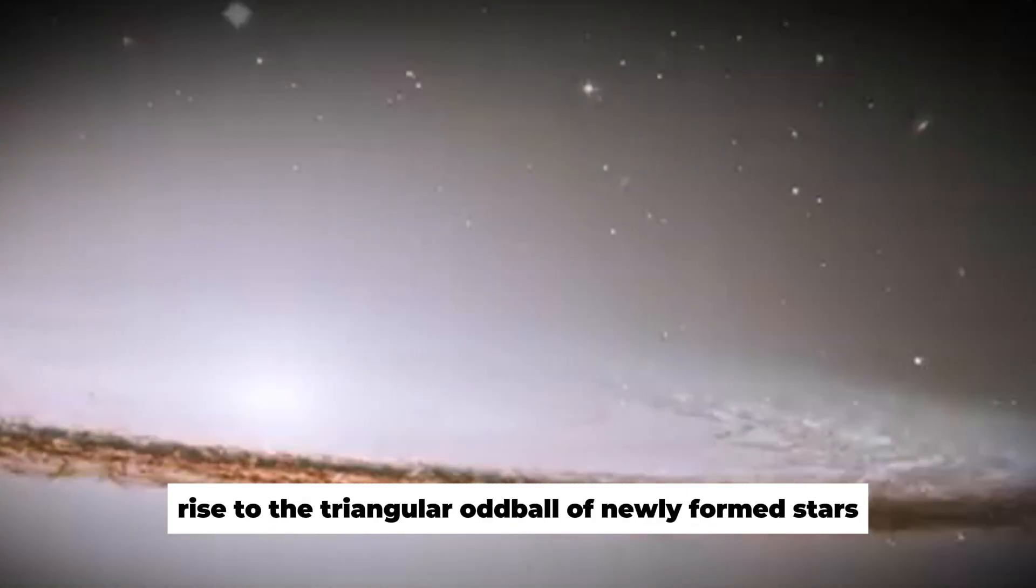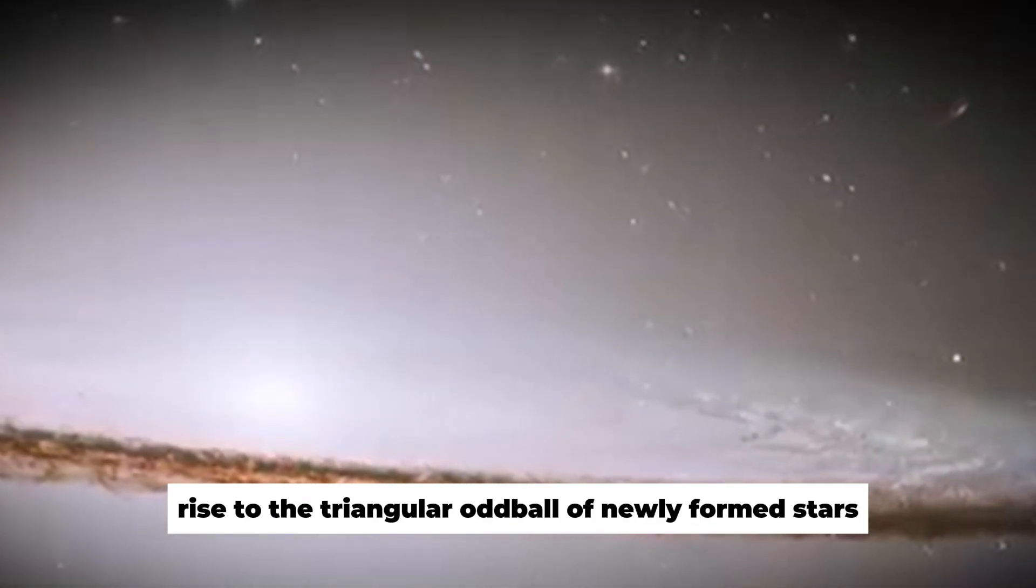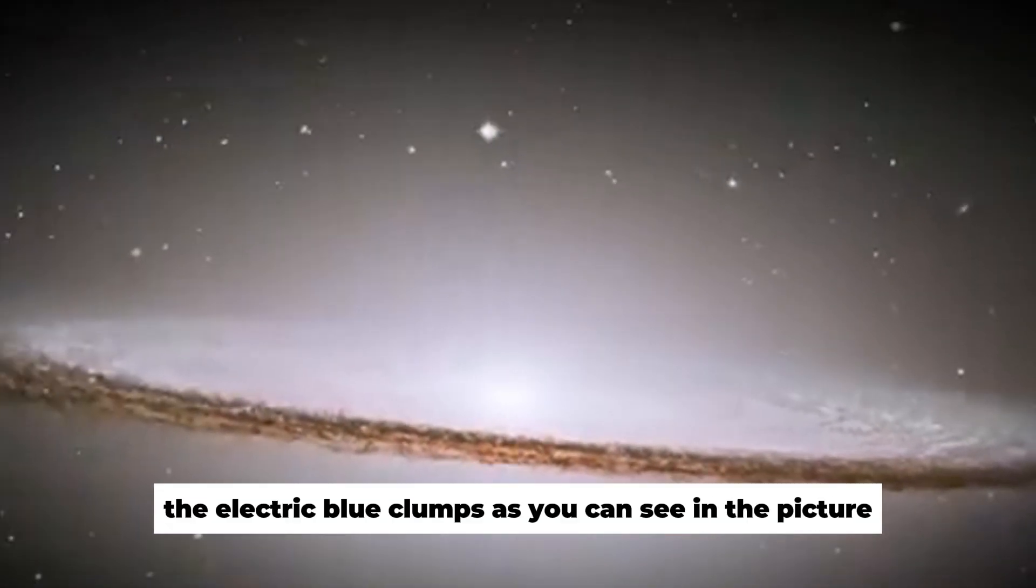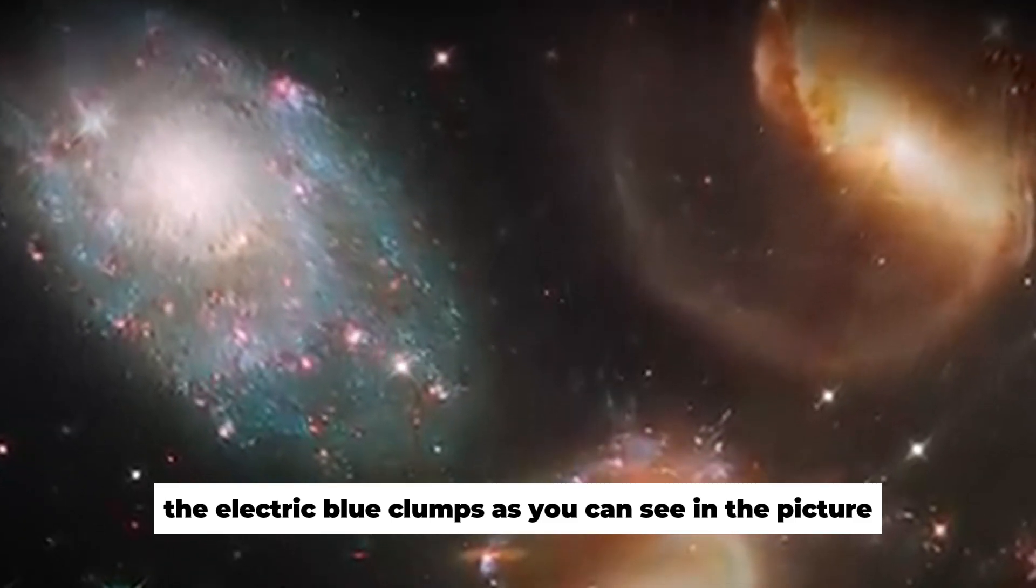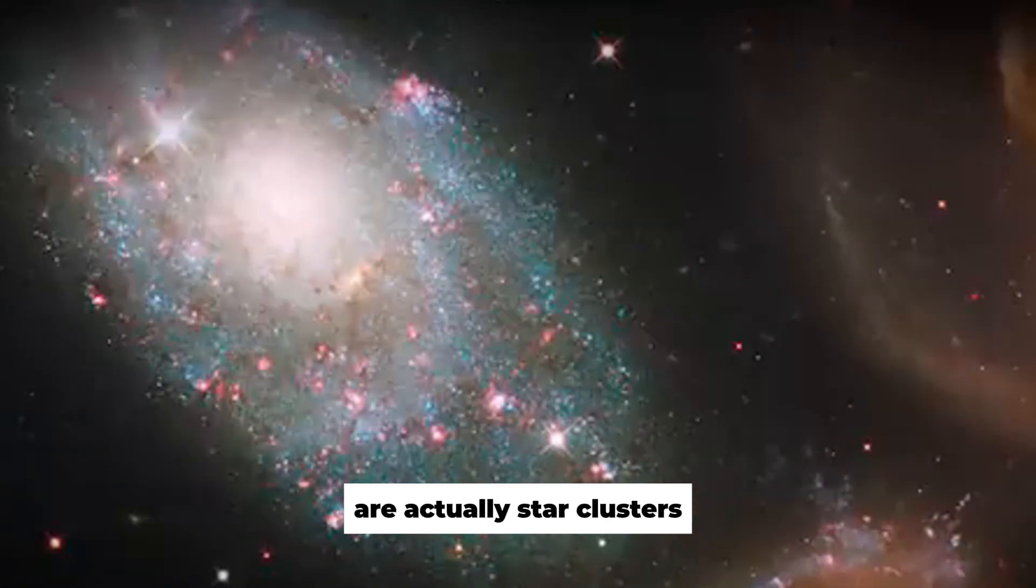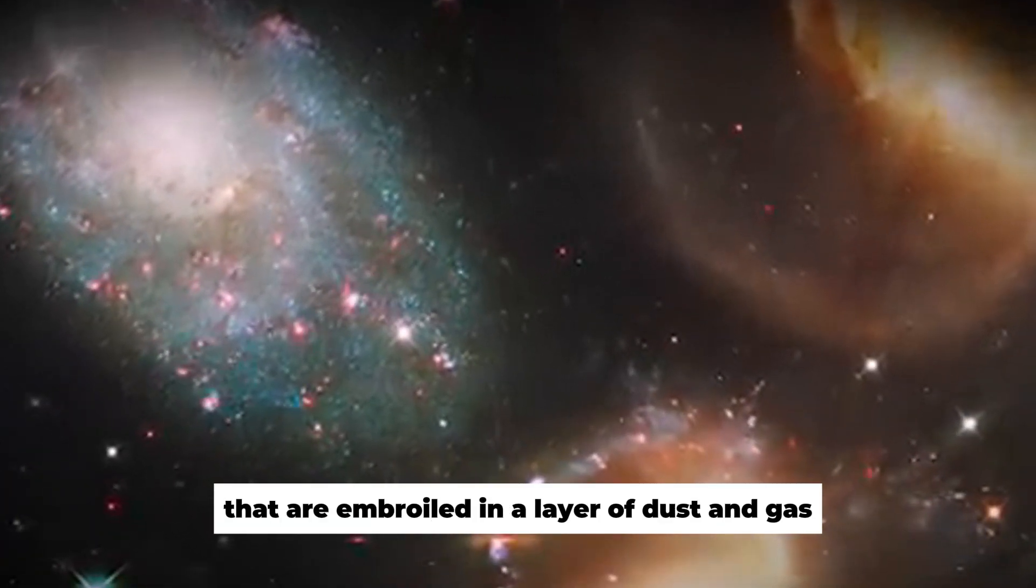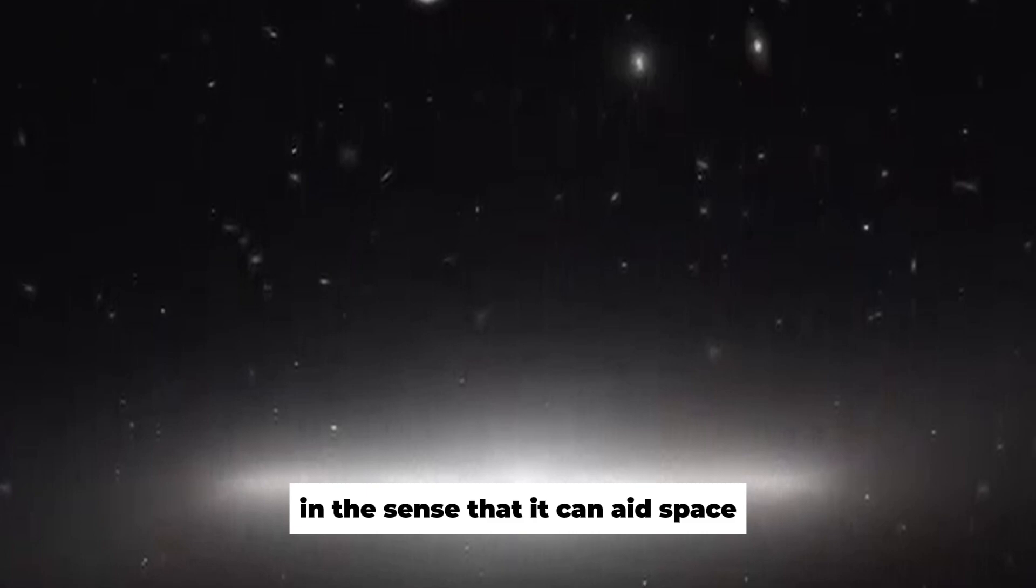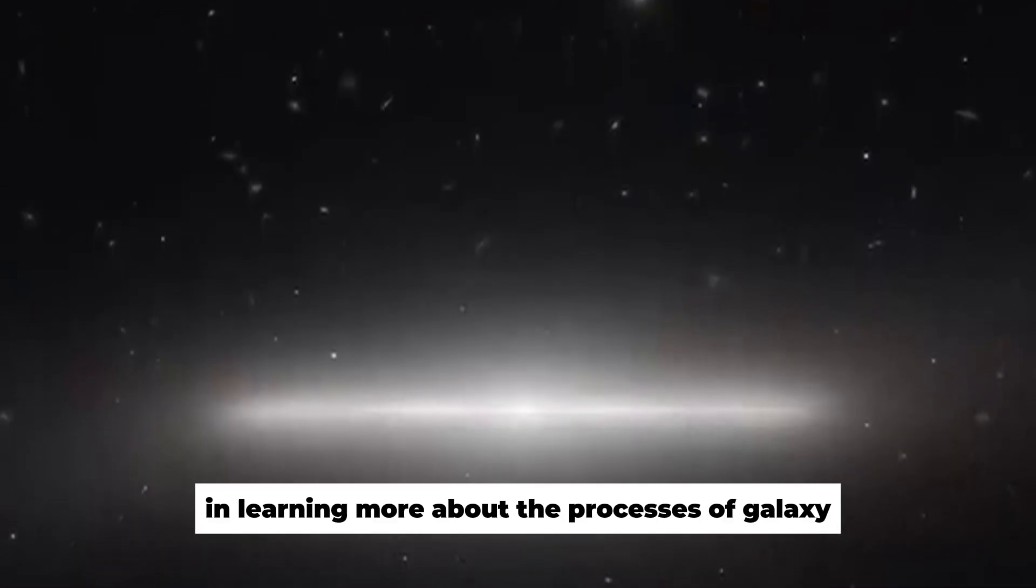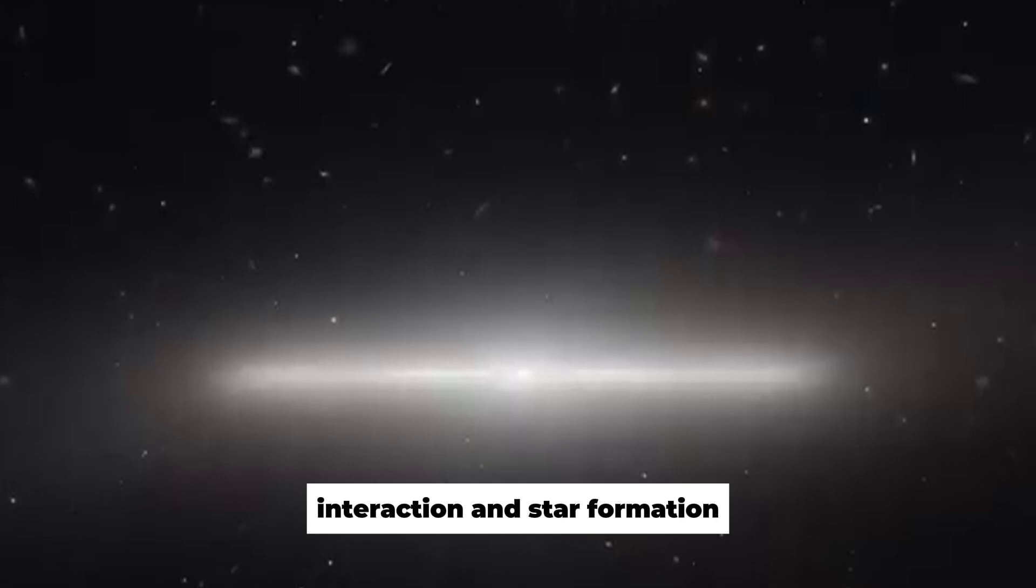The electric blue clumps, as you can see in the picture, are actually star clusters. The pink ball-like structures are massive young star clusters that are embroiled in a layer of dust and gas. This picture is really precious in the sense that it can aid space researchers in learning more about the processes of galaxy interaction and star formation.